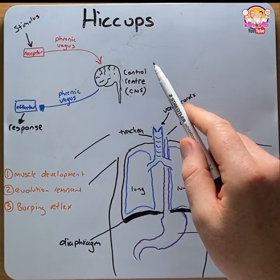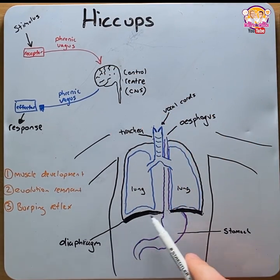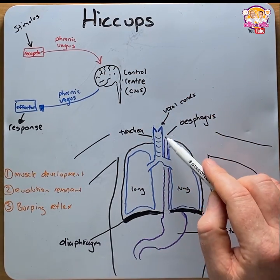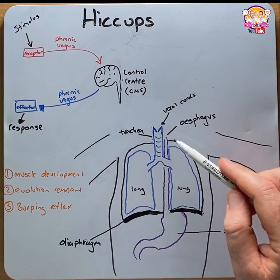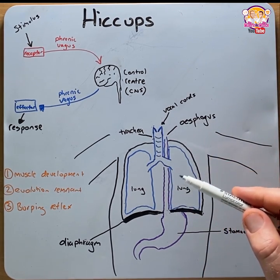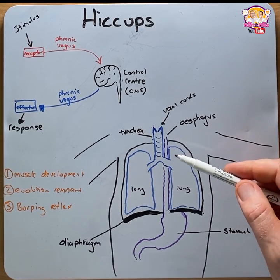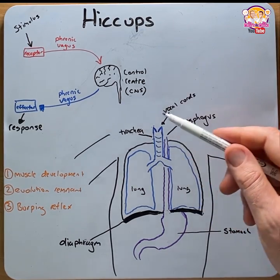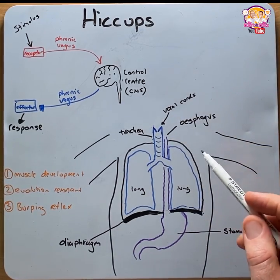A hiccup is an abrupt contraction of the inspiratory muscles, such as the diaphragm, against a closed glottis or vocal cords, which creates the distinct 'hick' sound. Hiccups are common and almost always transient, affecting all of us at some point in our lives.